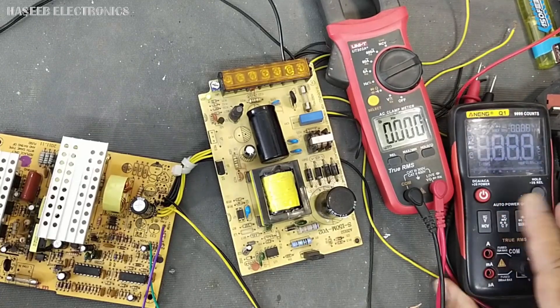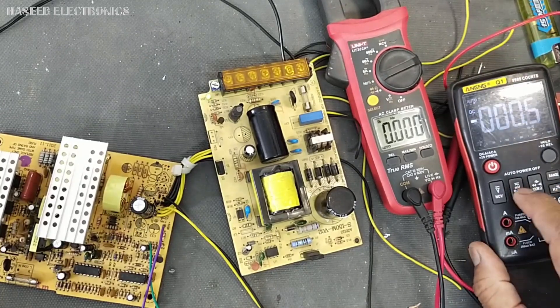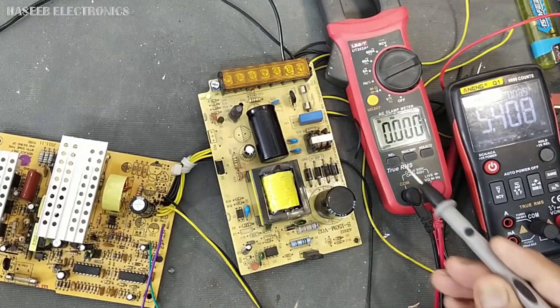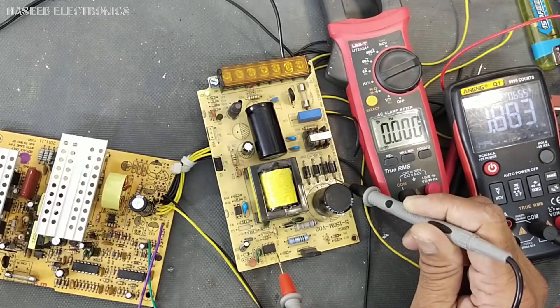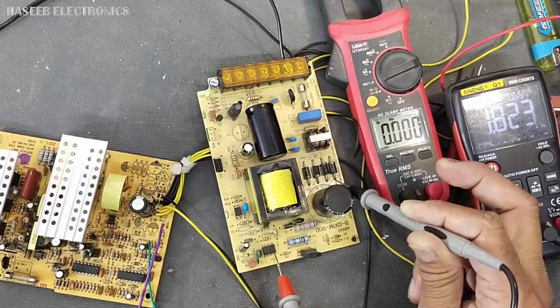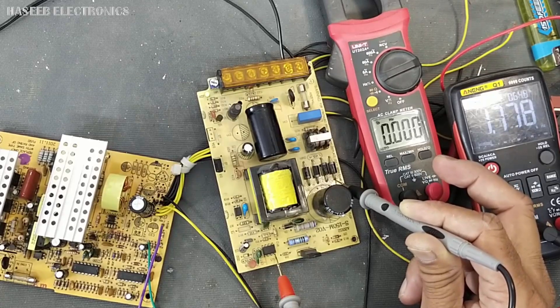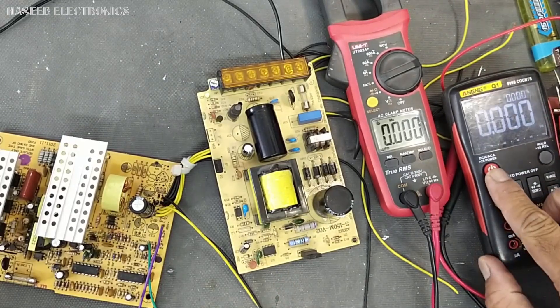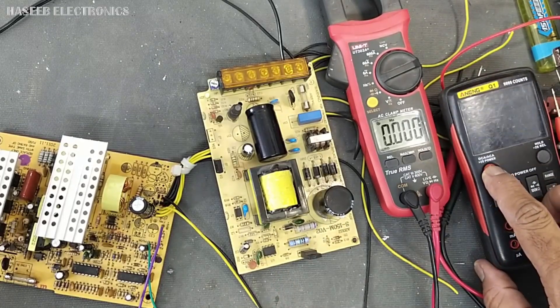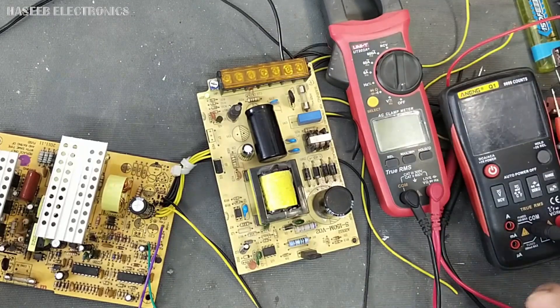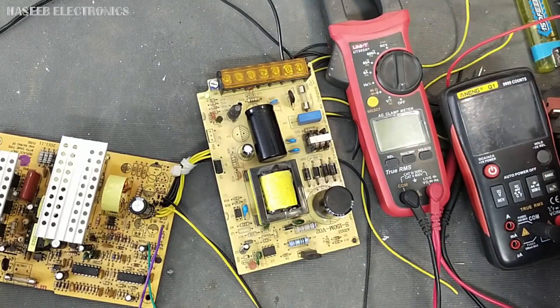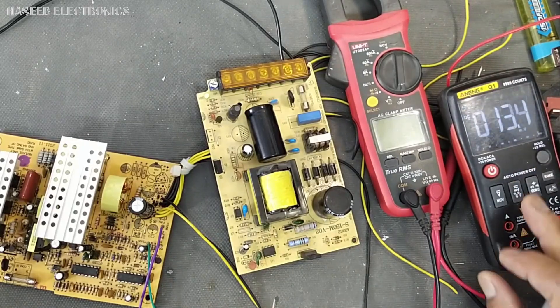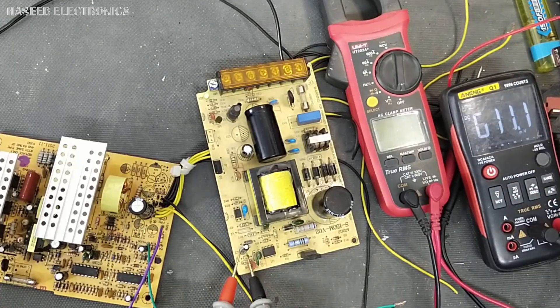I will use now this multimeter. So in this way we can verify the switching, either the IC is switching or not. The second thing we can also verify from this VCC capacitor. DC voltage across this capacitor.